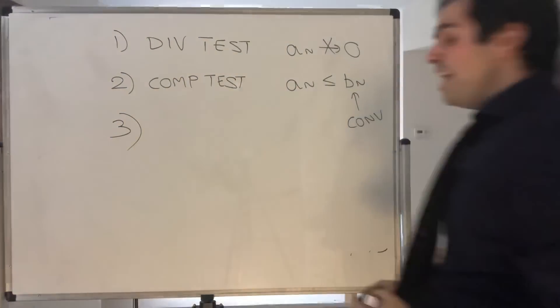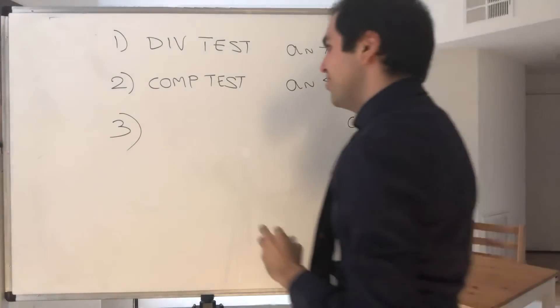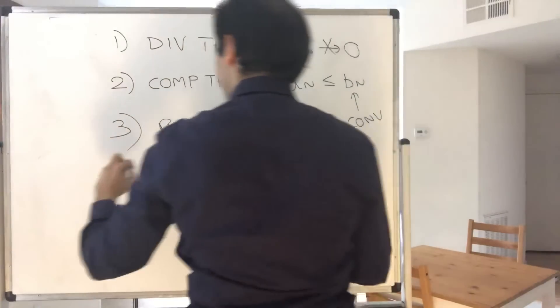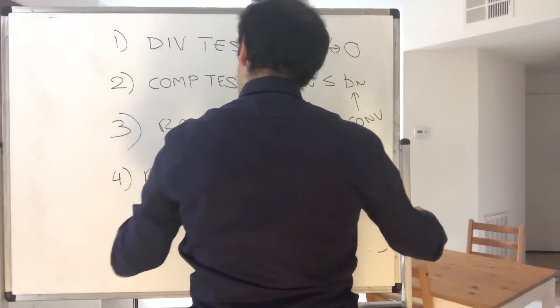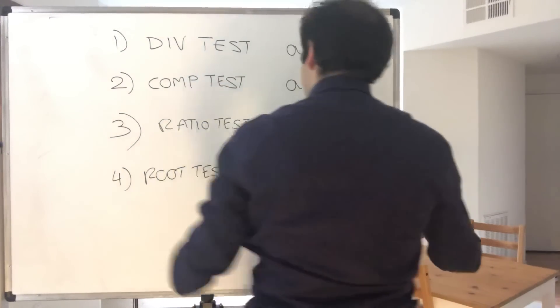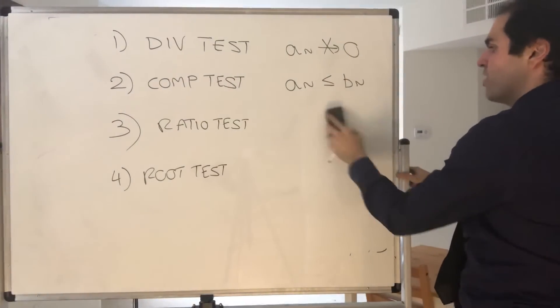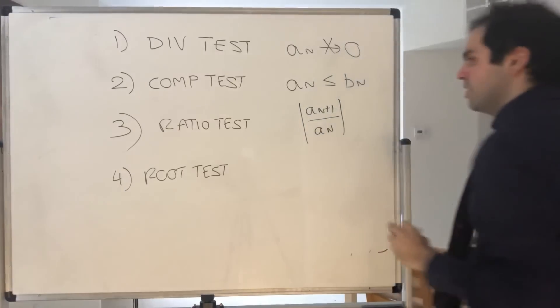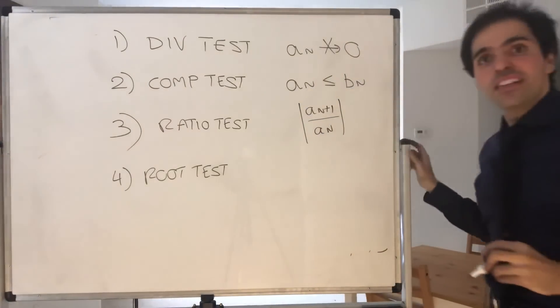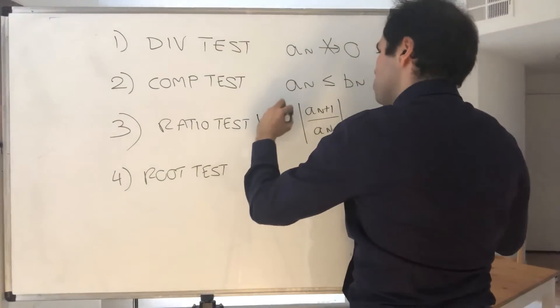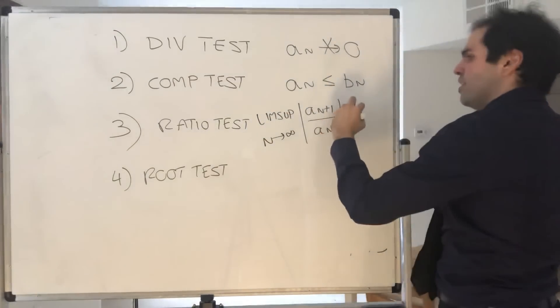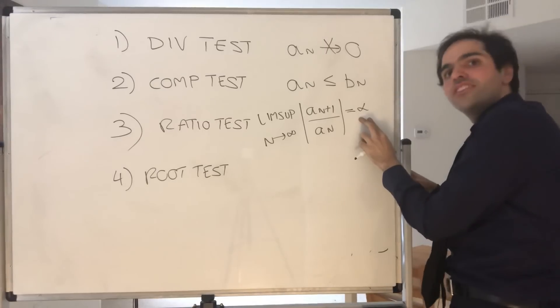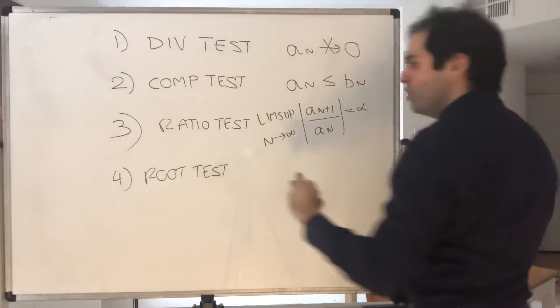And then, there are two siblings, what I call the ratio test, and the ratio test has to do with successive terms. You look at a_(n+1)/a_n, and the problem is this limit doesn't always exist, but we can always take the limsup. So, if the limsup of that, let's say, is α, if α is less than 1, then the series converges. If it's greater than 1, then it diverges. If it's 1, we don't know.